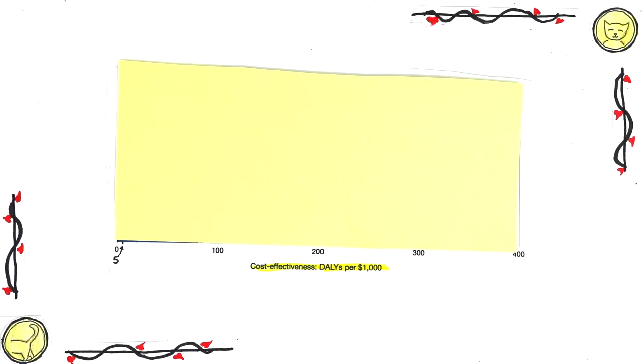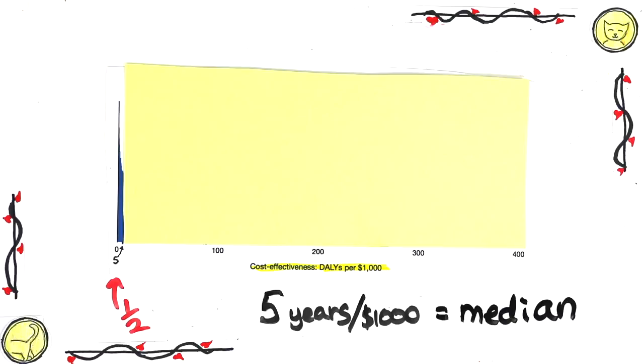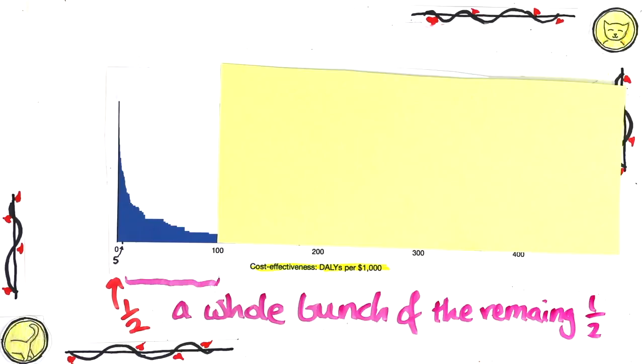What they found was half the 108 interventions saved people five years or less of life for that cost. In other words, five years was the median value in this study. So you might expect that the best interventions would then save around 10 to 15 years. At least that's what I would have guessed. But actually, a whole bunch of the remaining half fall between five years to 100 years, which is great.